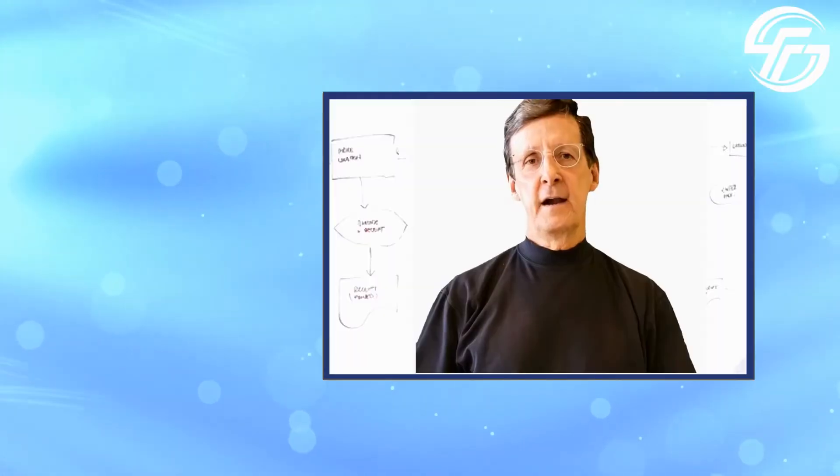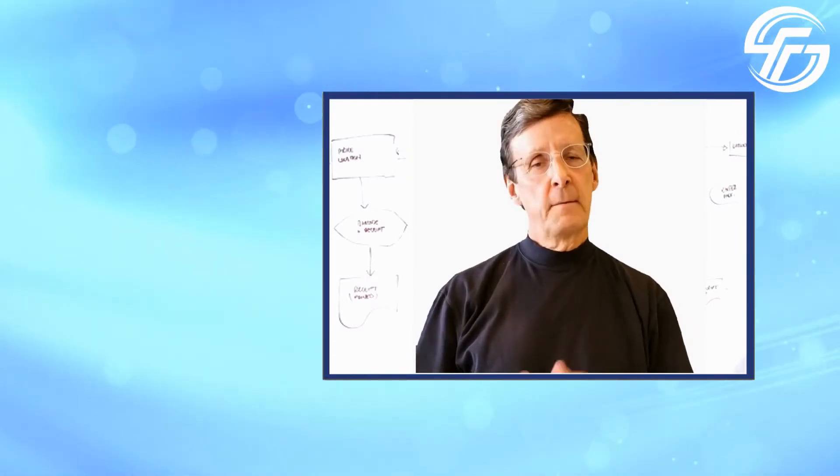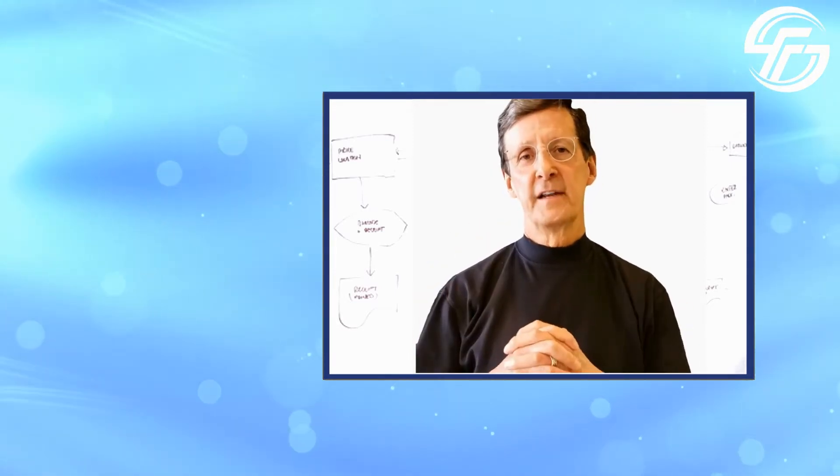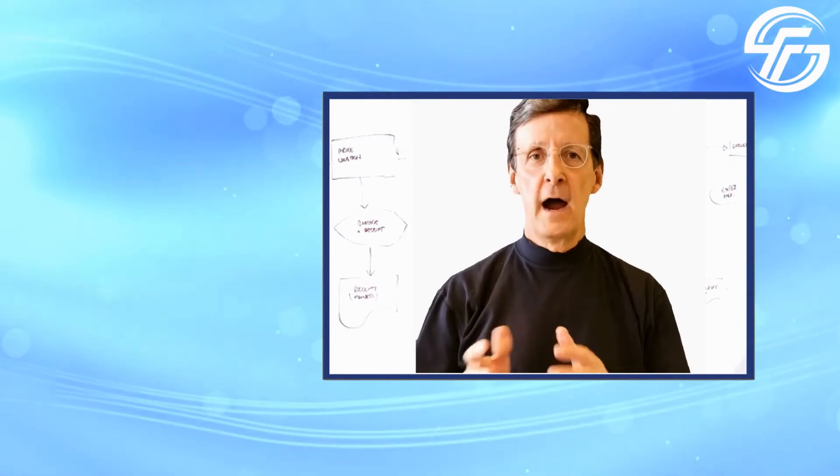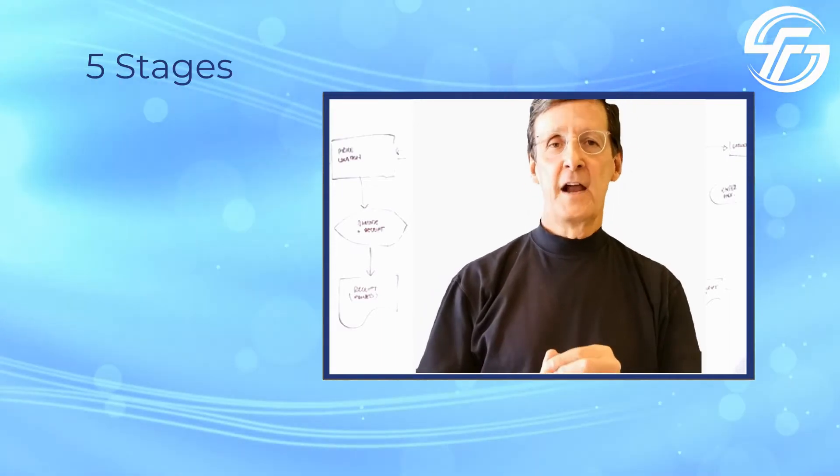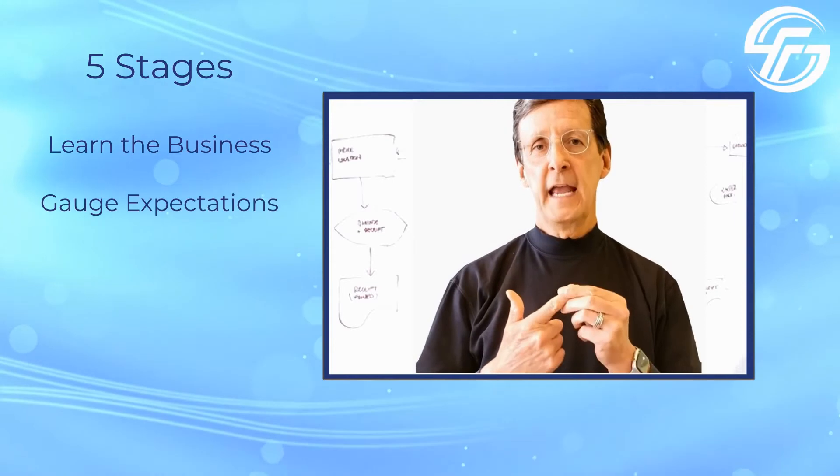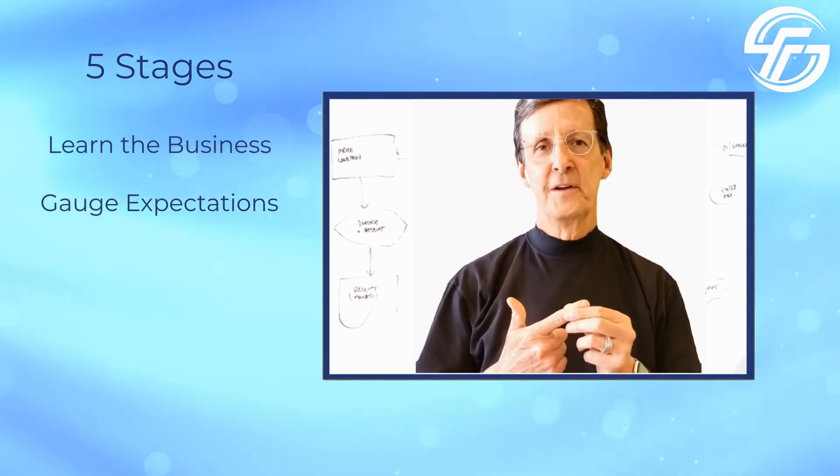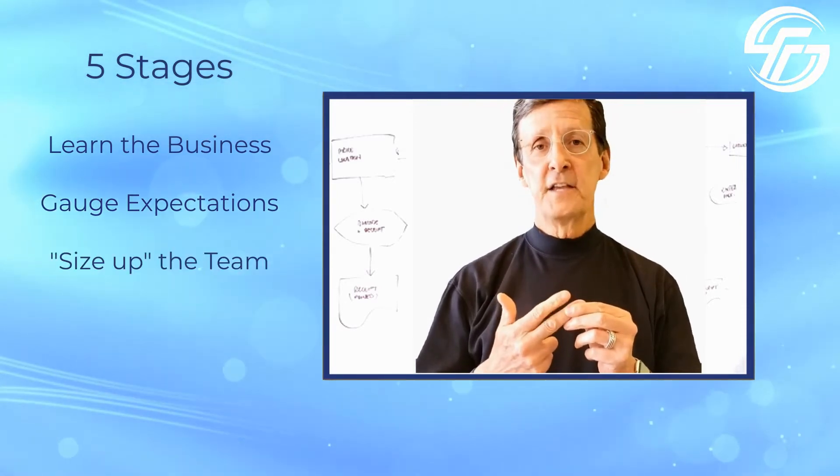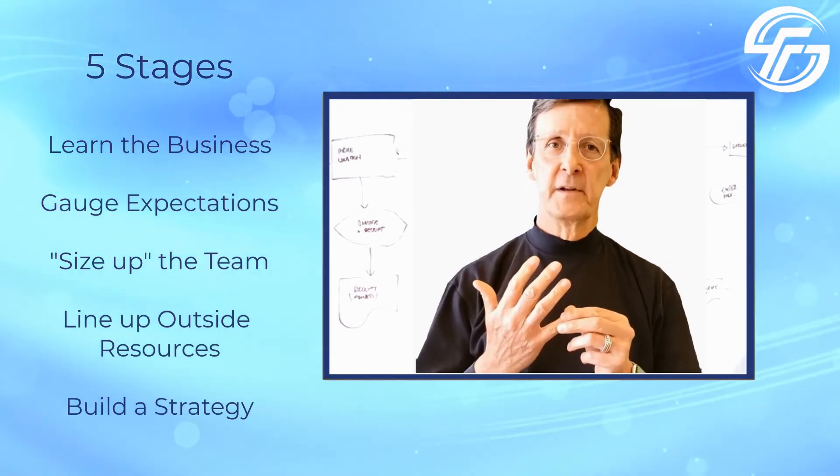Every job I started, I didn't do audits, I did a Performance Index. At the macro level, there are five things you do when you start a job or examine a function. First, learn the business. Second, gauge expectations—how are you successful if you don't know what the expectations are? Third, size up the team. Fourth, line up outside resources. And fifth, build a strategy.